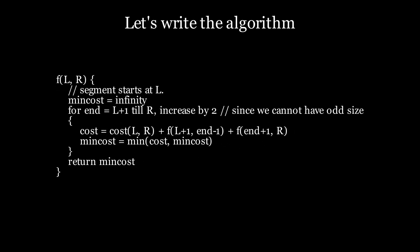We need the minimum of all such answers. So we initialize minimum to infinity and then update it once we get a better answer. And we have to calculate the answer for the other two segments as well. After all this, we will finally return the minimum cost.